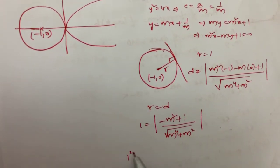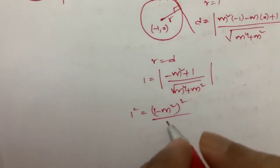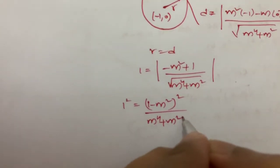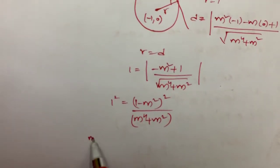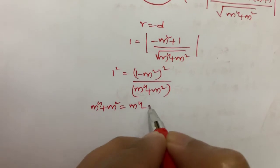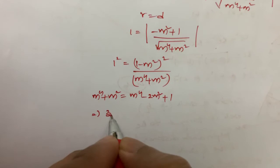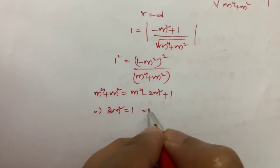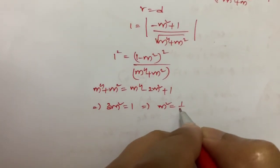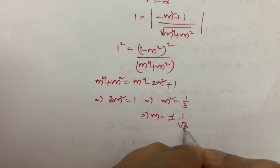So now m⁴ + m² = m⁴ - 2m² + 1. So if I solve this, 3m² = 1. So m² = 1/3. So m = ±1/√3.